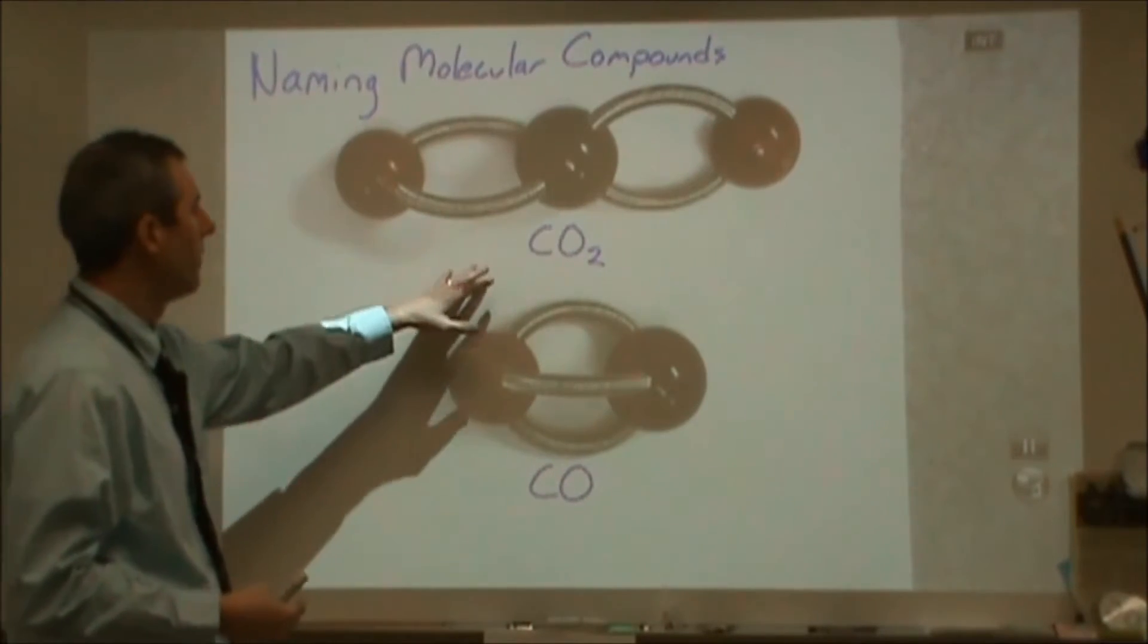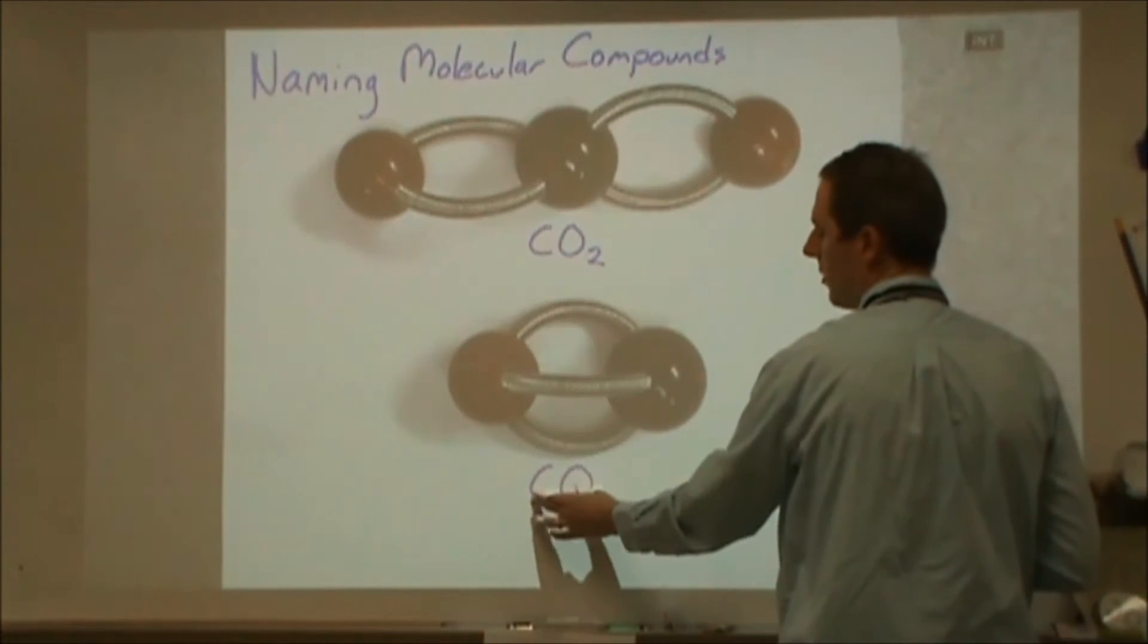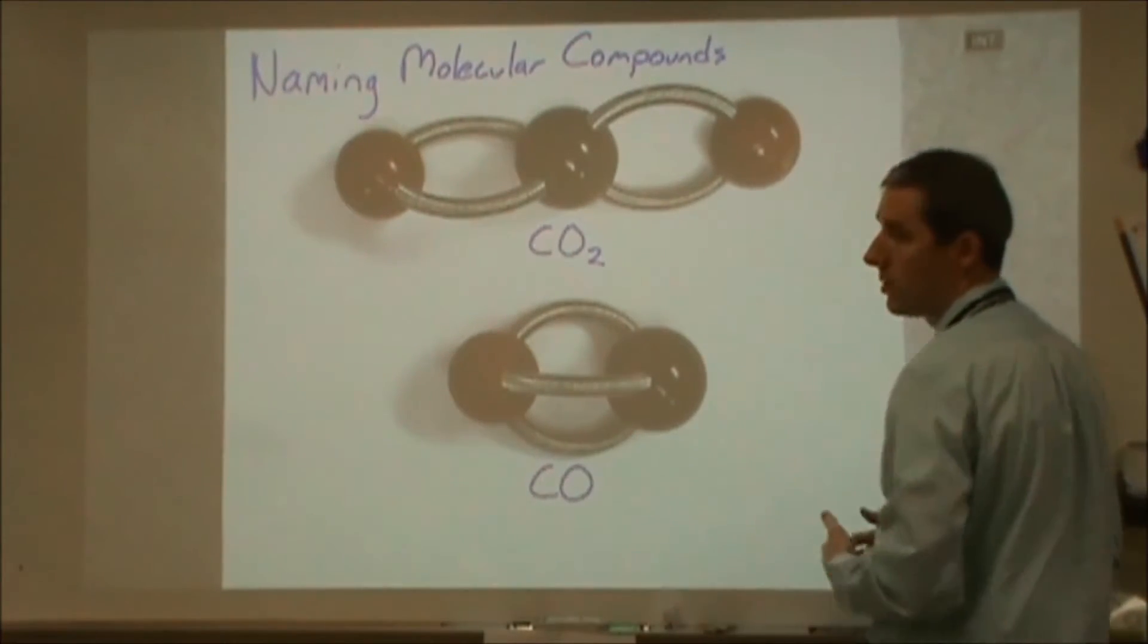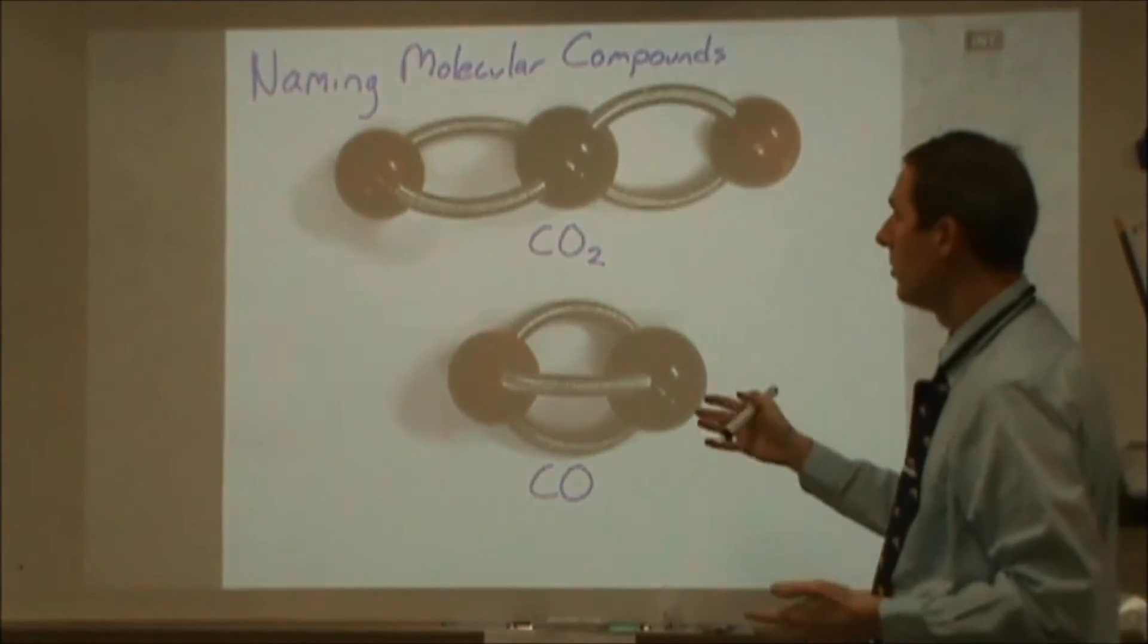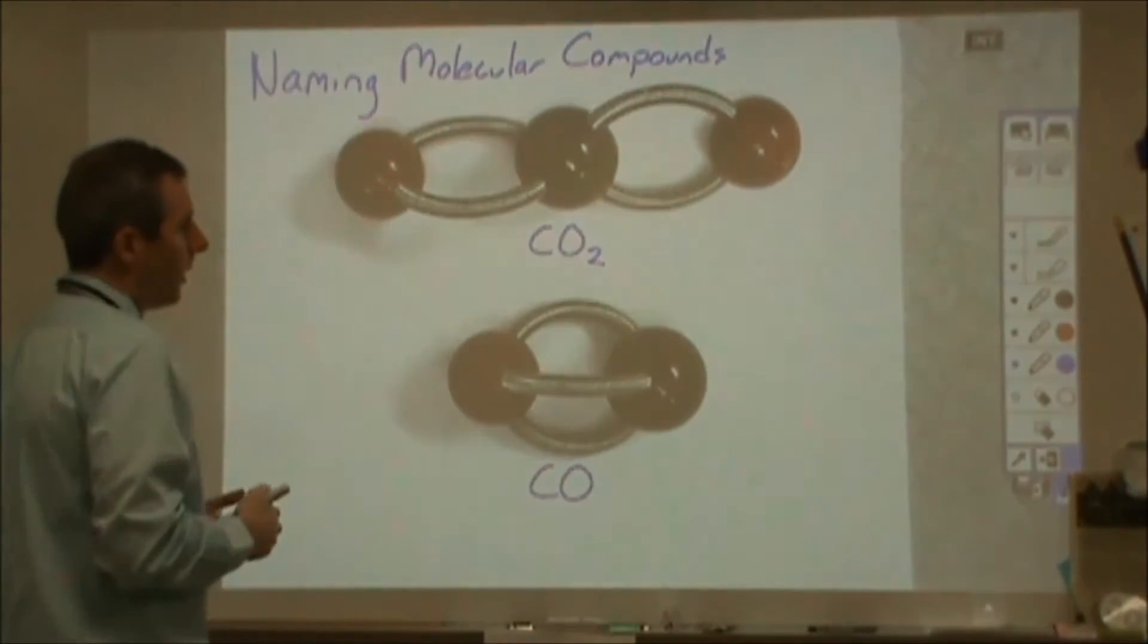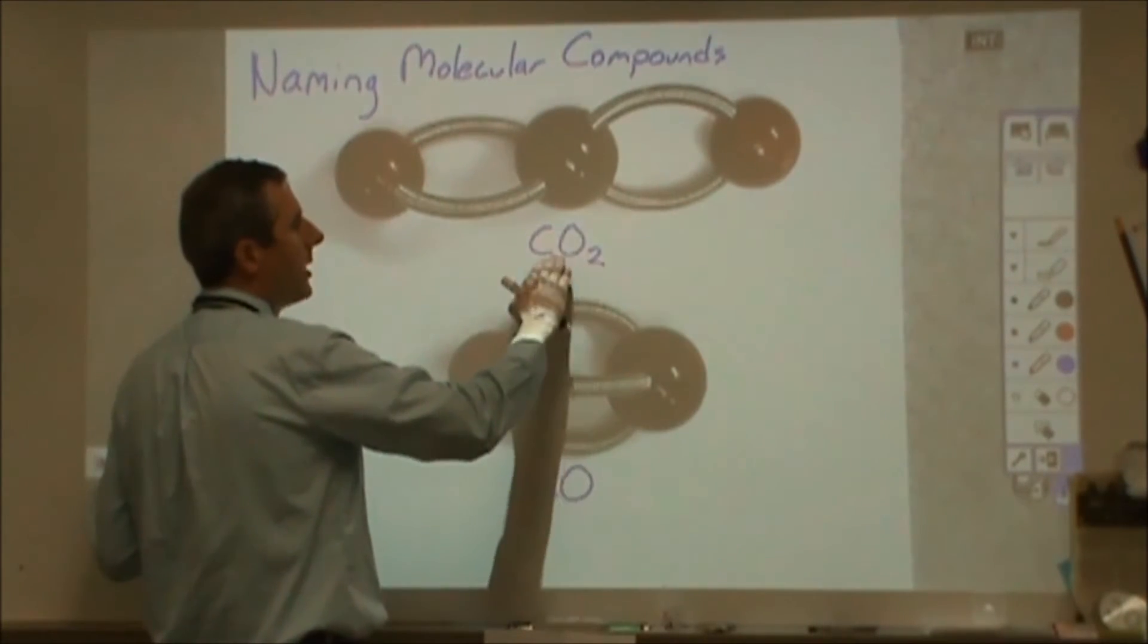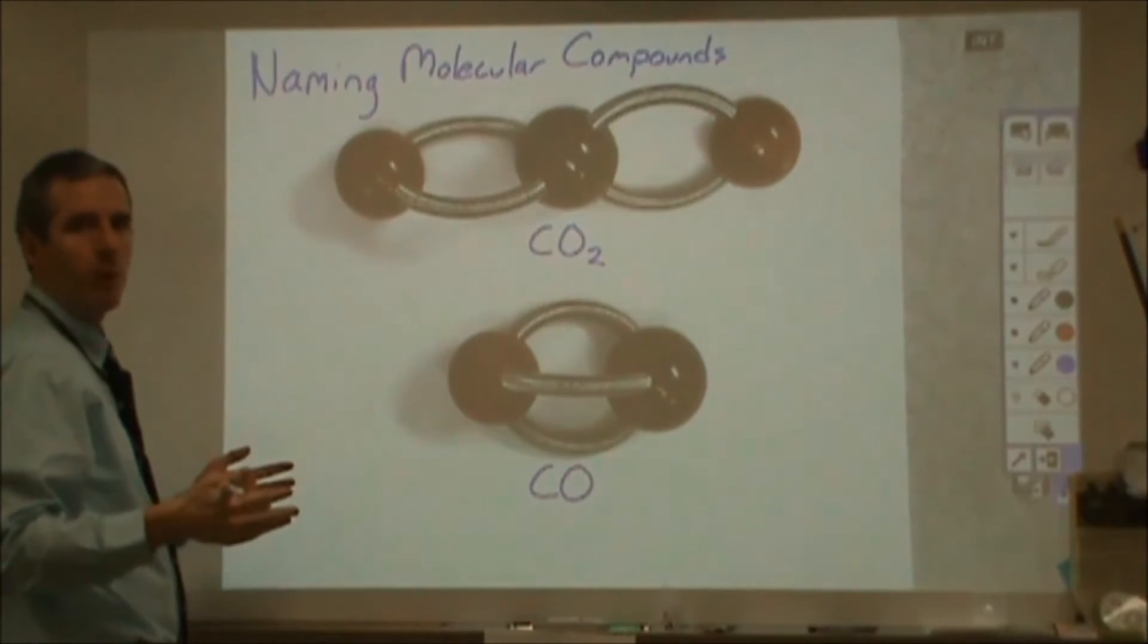And so what we've done is just a really simple, named elements. Just like in ionic, you do change the second one to IDE. And you list these in order based on electronegativities. In addition to that you just indicate how many of each one there are using a set of prefixes.